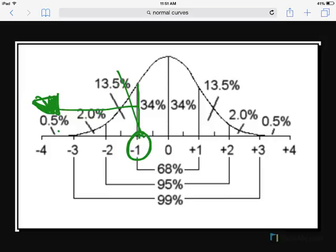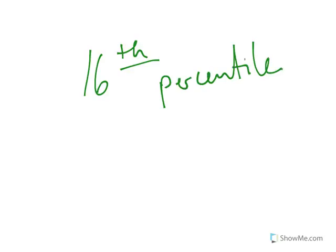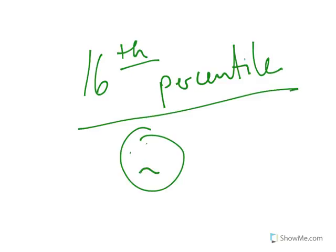So in this case, we have 0.5% plus 13.5%, so that takes us to 14%, plus 2%, so 14 plus 2 is 16. So your score is actually the 16th percentile. So this is not good. You should be sad.